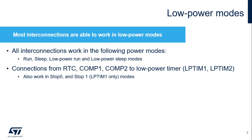Peripherals may be interconnected using the Interconnect Matrix even when the circuit is in a low power mode. The operating modes that can be used are run, low power run, sleep, and low power sleep modes, and timers, analog, and digital IPs for the connection destinations.